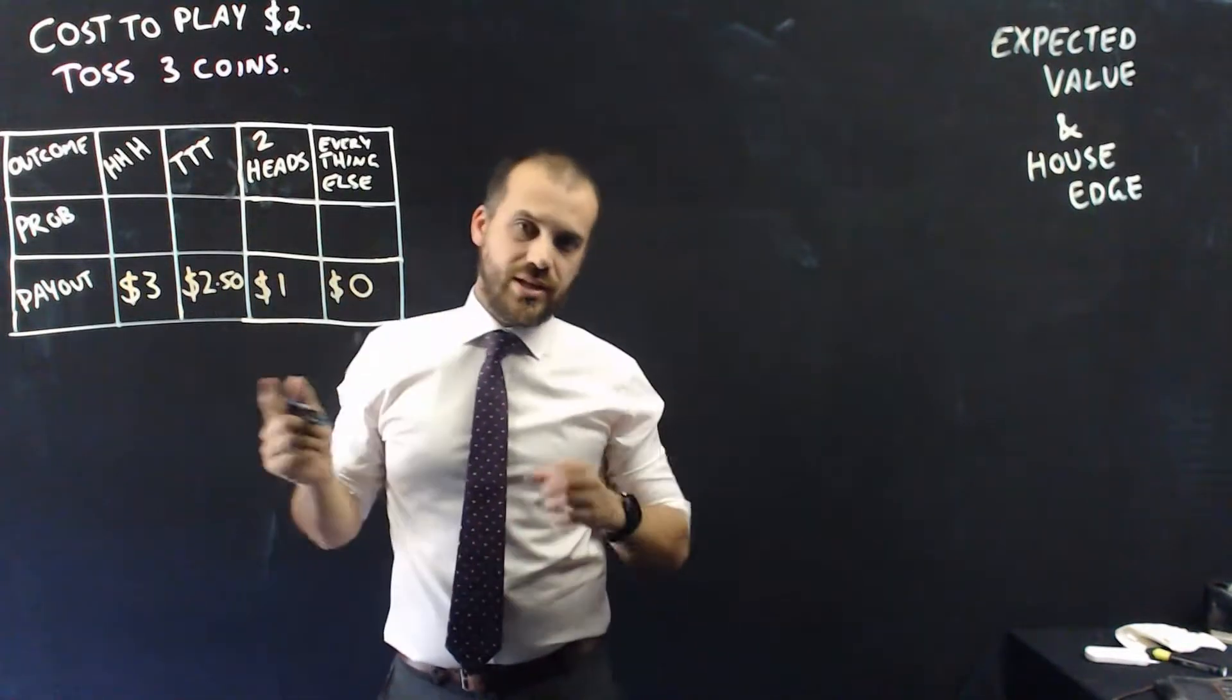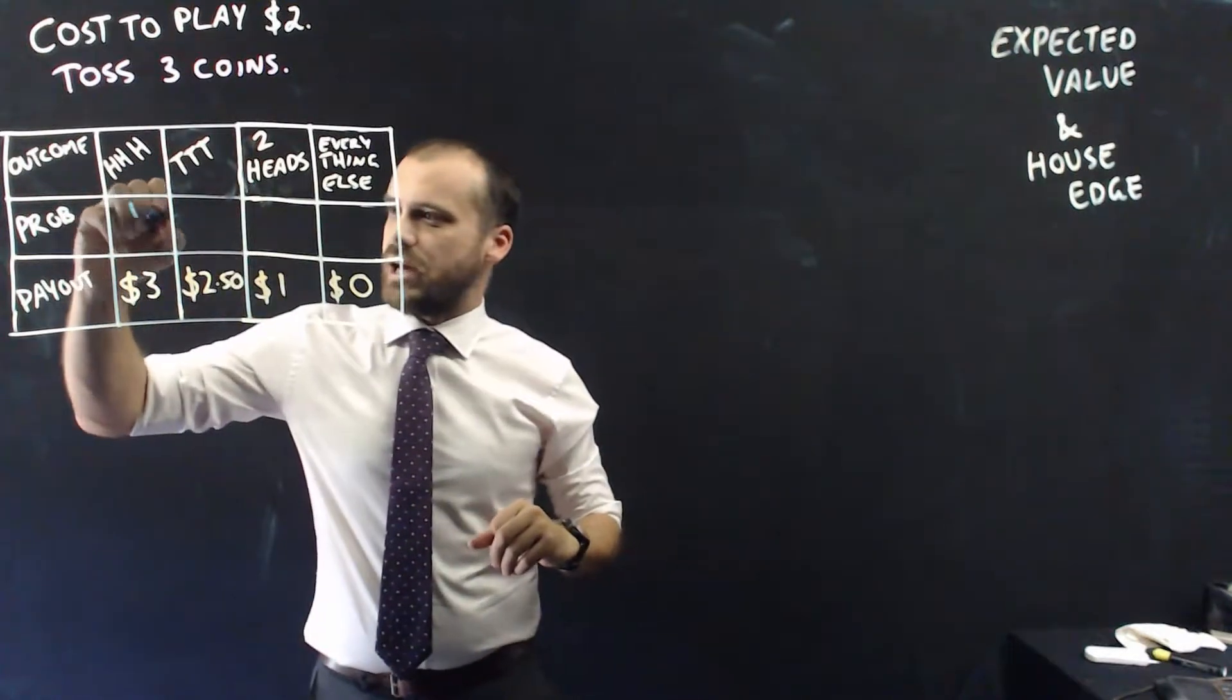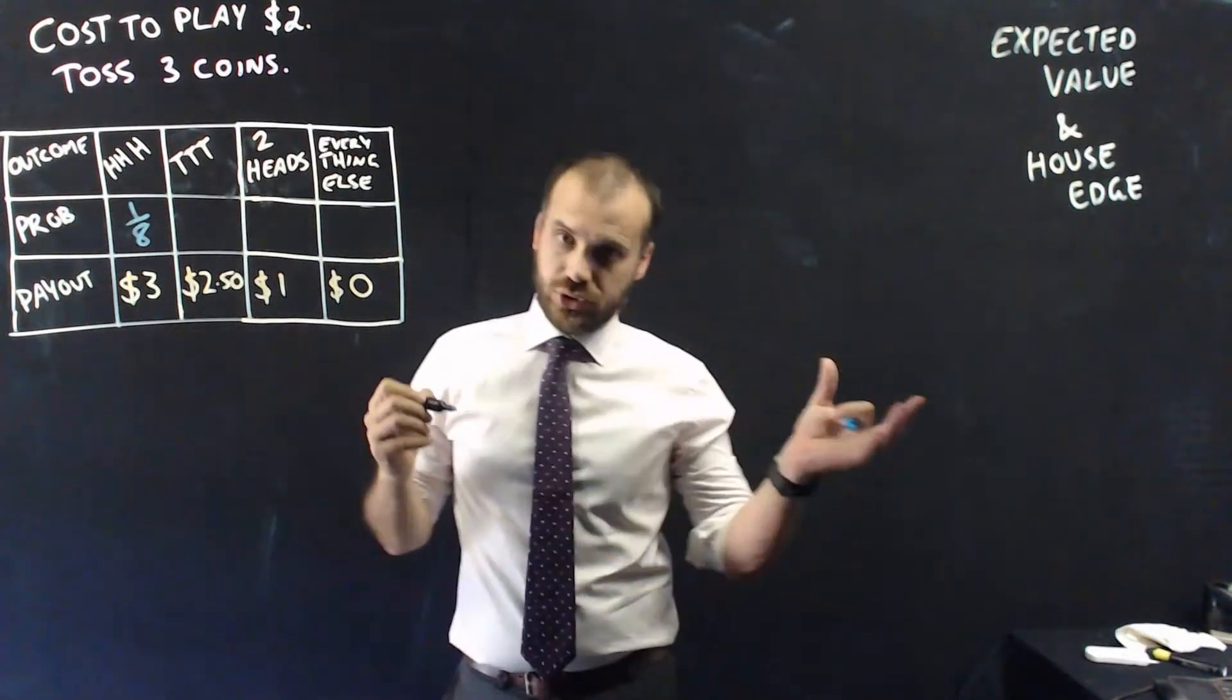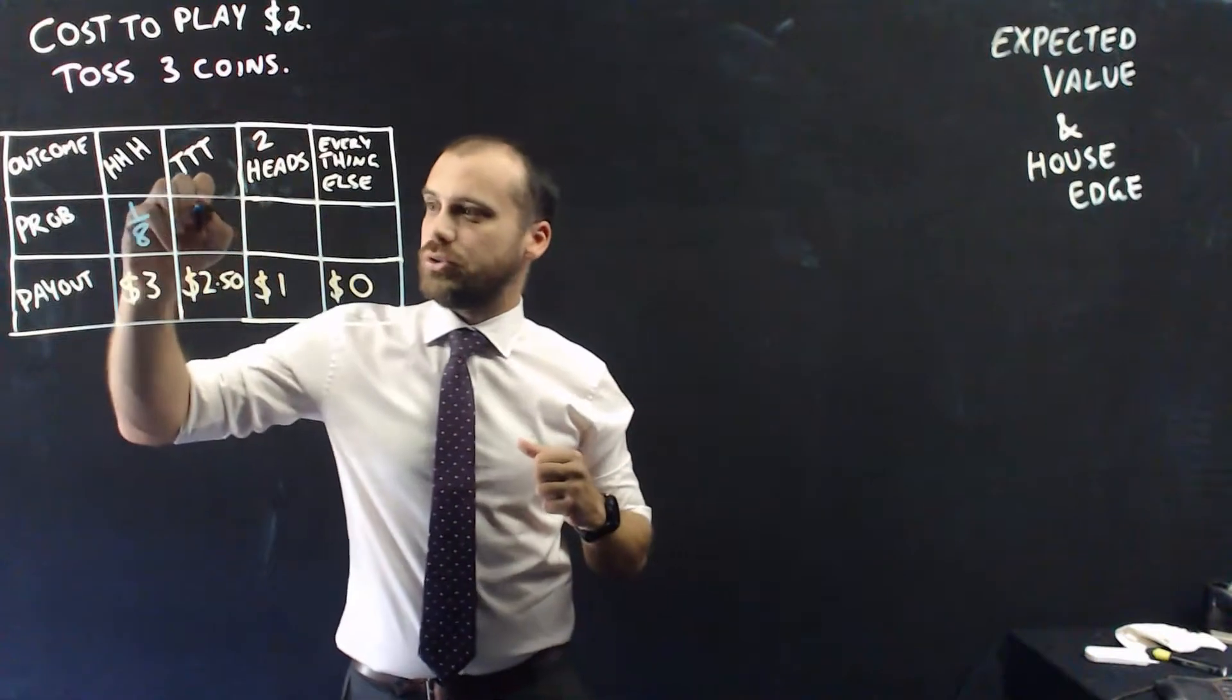Now let's consider what the probabilities are. So the probability of heads, heads, heads, I'm not going to draw the tree diagram, but it's 1 in 8. Now, two-sided coin, tail, tail, tail, also 1 in 8.